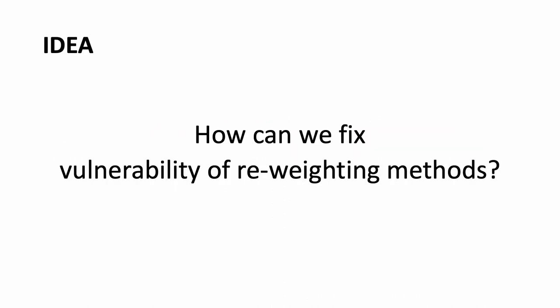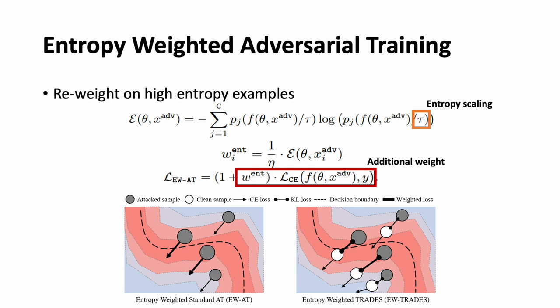Then, how can we fix this vulnerability of reweighting methods? We found that entropy is an important standard to obtain robustness from the previous observation. With those findings in mind, we propose a simple yet effective entropy-weighted adversarial training, which weighs more on high-entropy examples. Furthermore, to prevent uncertain predictions, we always pull examples inside the decision boundary. In more detail, we calculate the entropy of each adversarial instance and use the entropy as an additional weight for each sample.